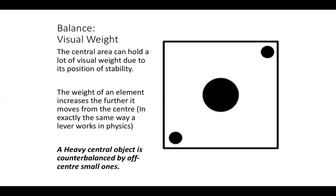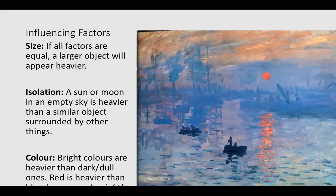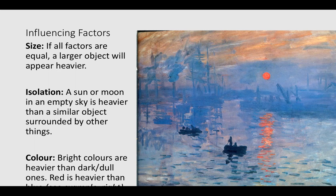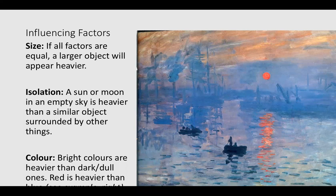Let's look at some examples of how this plays out in real painting. The influencing factors on visual weight — I'll read them out. Size: if all factors are equal, a larger object will always appear heavier. Isolation: a sun or a moon in an empty sky is heavier than a similar object surrounded by other things. Colour will influence visual weight: bright colours are heavier than darker dull ones, and red is heavier than blue. If you look at Monet's Impression Sunrise, the red is exerting a lot more weight than the blue.